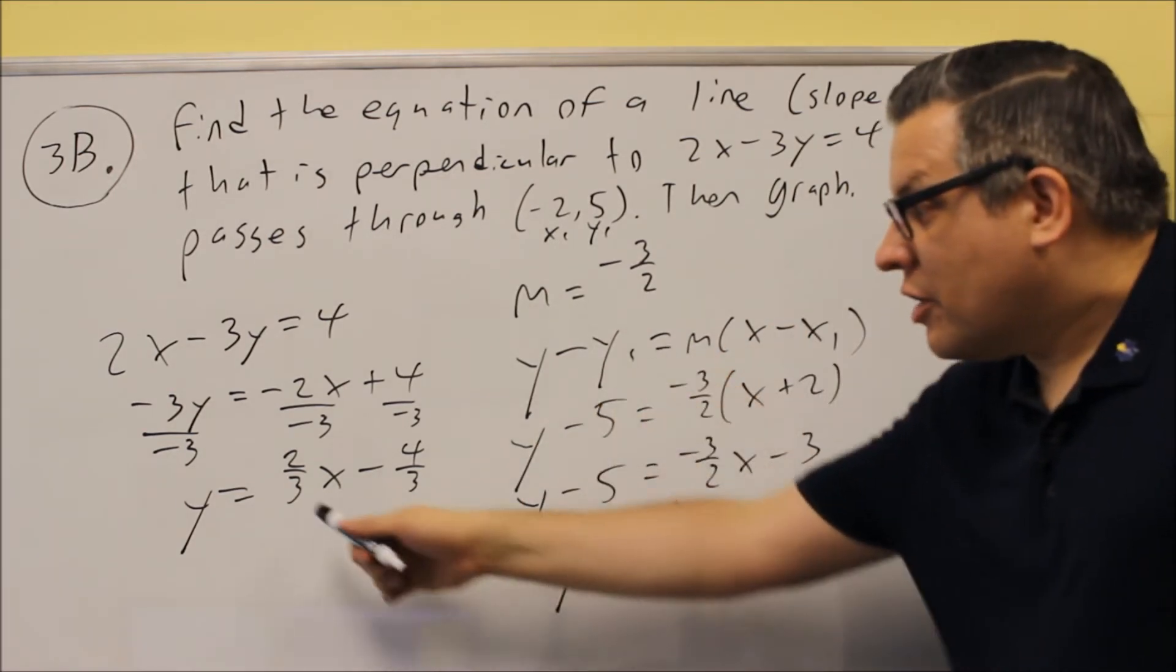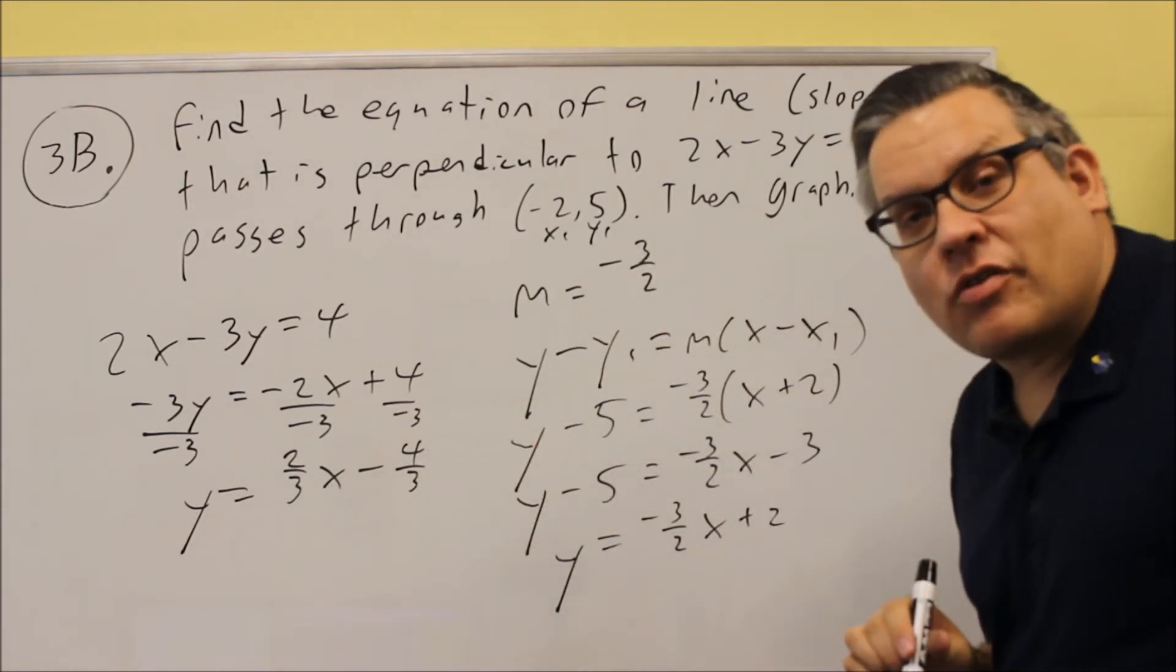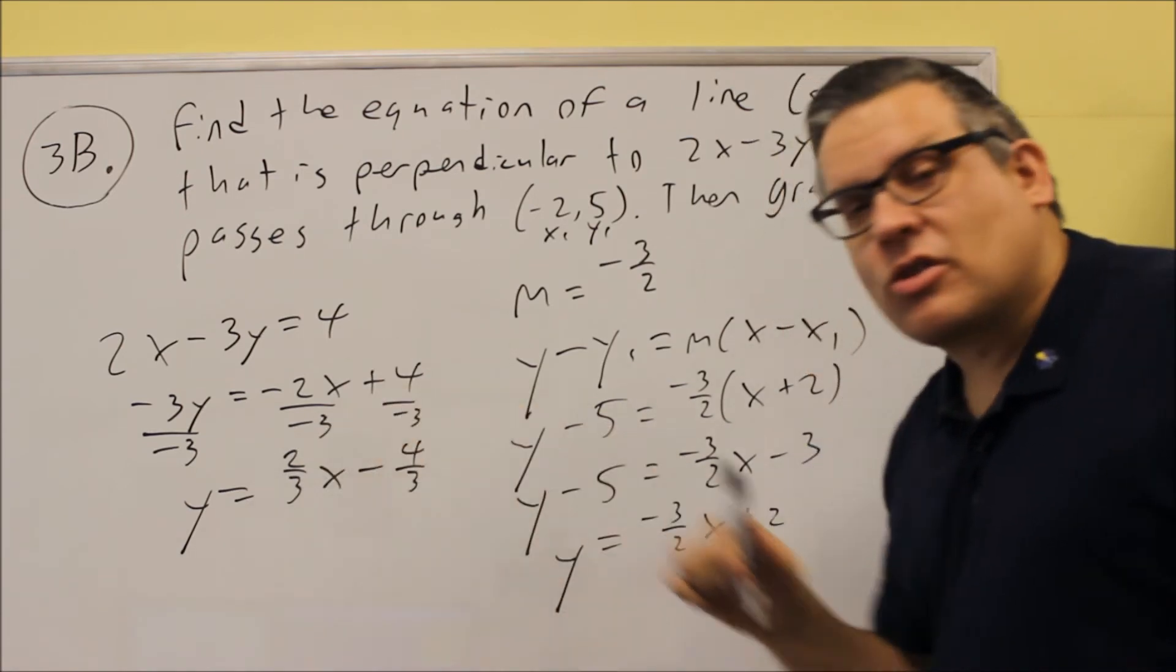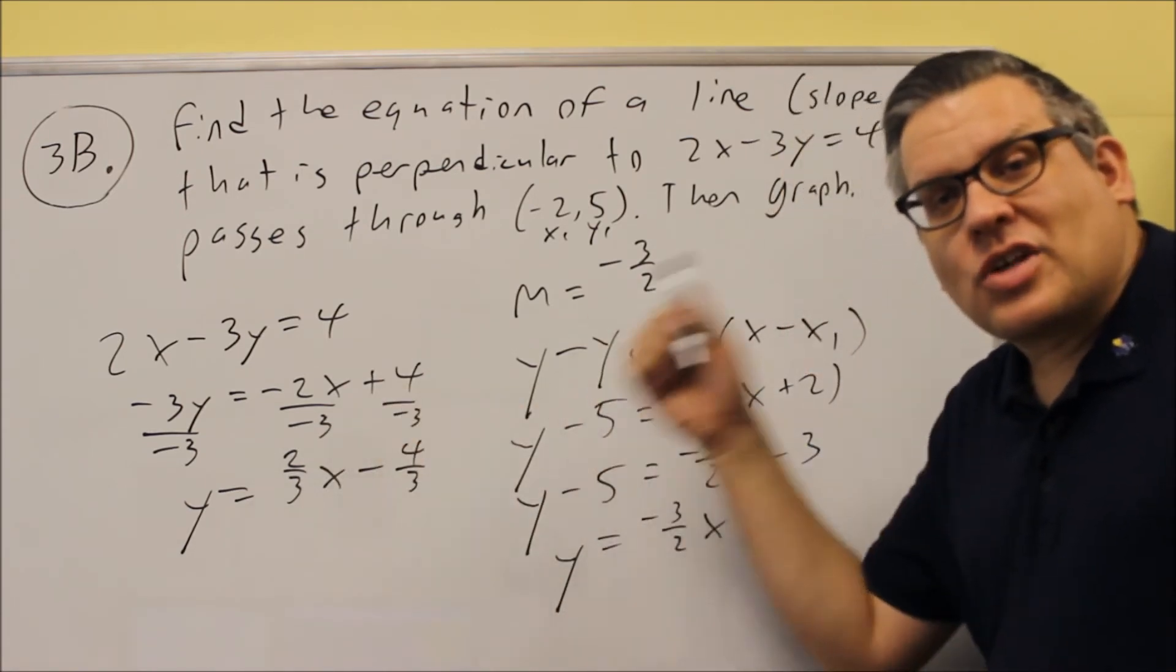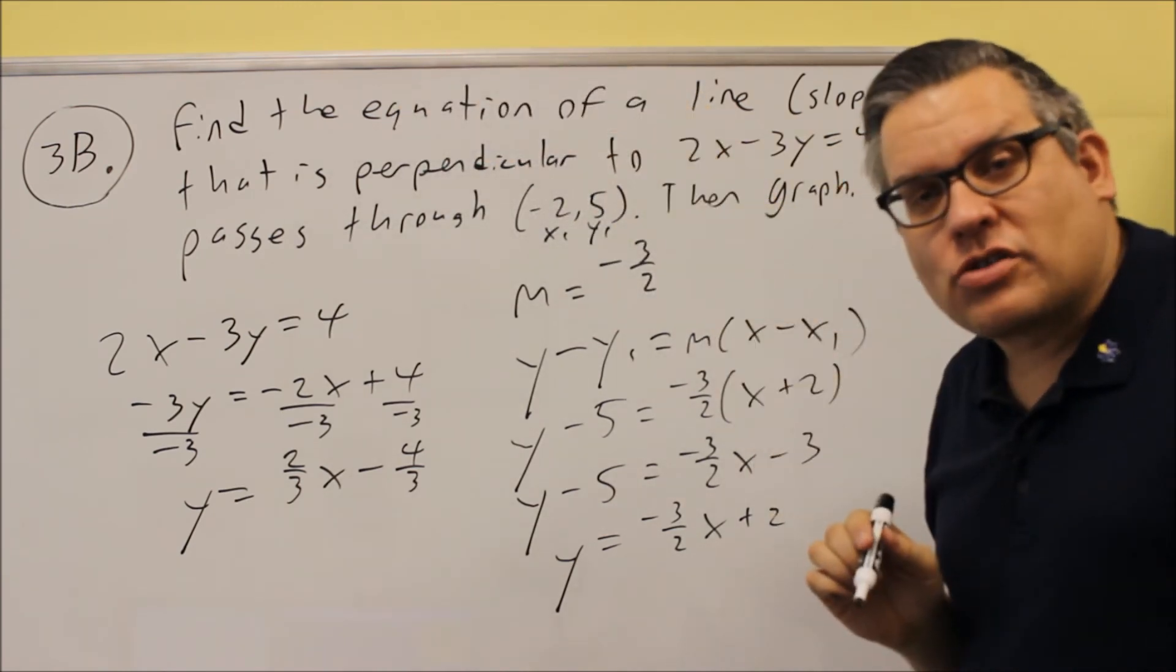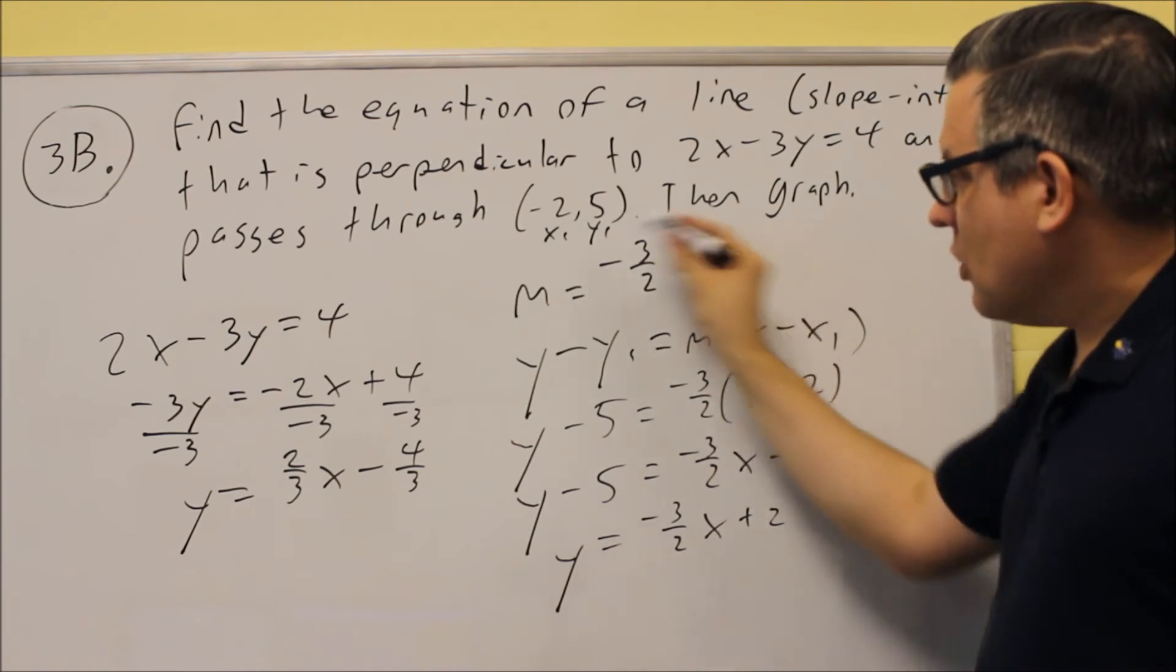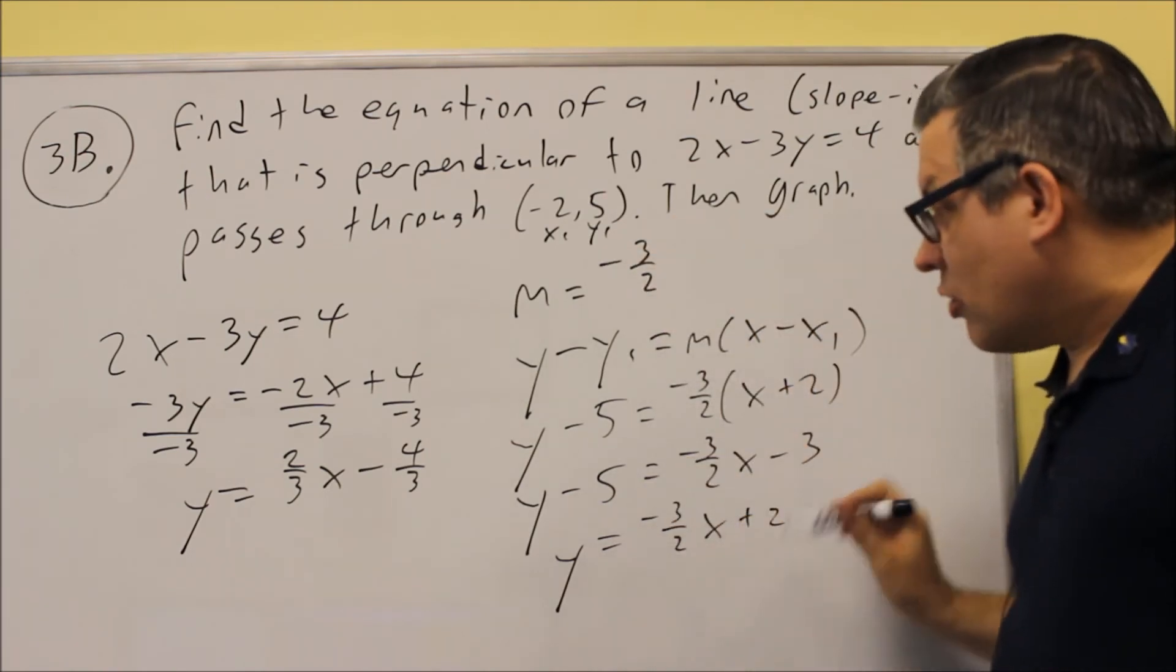Parallel means it's got to be the same slope. Perpendicular is opposite reciprocal slope. So pay close attention to what it asks in the question, because it might be parallel or perpendicular, either one. But in this case, the answer is going to be this one.